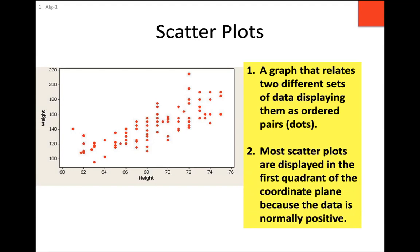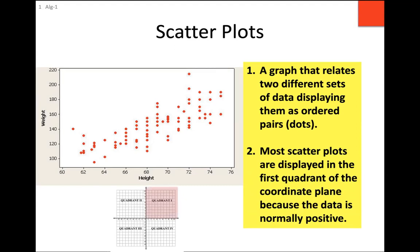Most scatter plots in the real world contain mostly positive data. They're plotted on the x-y coordinate plane, but since the data here — no one can have a negative height or a negative weight — the data is only positive, so it only occupies quadrant one. When you see a scatter plot, you're typically only looking in quadrant one. We're going to make and interpret some scatter plots.